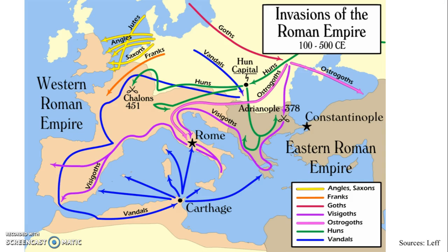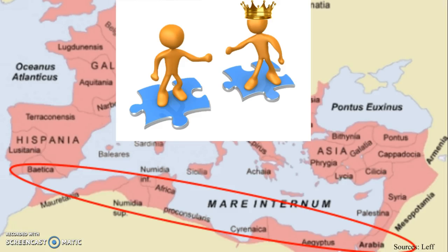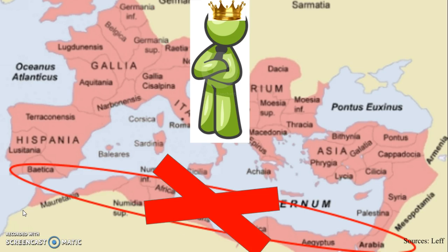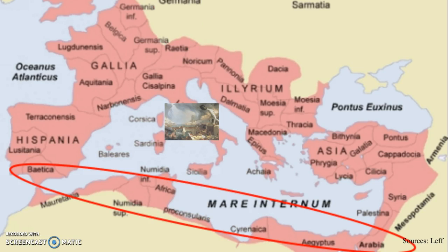Another group of barbarians, the Vandals, were pushed into the Roman Empire by the Visigoths. The Vandals had an agreement with an emperor to control North Africa. However, when that emperor died, the new one did not honor the agreement. This caused the Vandals to sack Rome, and then go back and control North Africa.